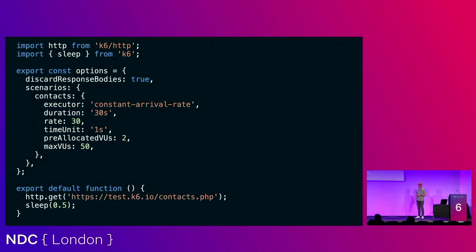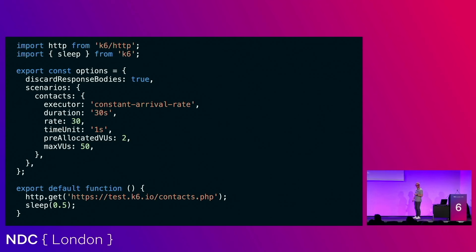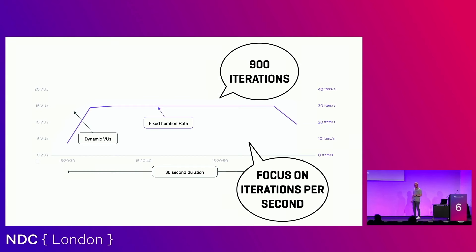The arrival rate focuses on iterations per second rather than individual VUs. We run for 30 seconds at a rate of 30 iterations per second — that's what we want to reach. Virtual users will vary, starting at 2 and going up to 50 as required. In the graph you can see VUs are dynamic and scale as needed, but the iteration rate is a straight line — a total of 900 iterations at 30 per second. If you want to see how many iterations per second your system can handle, the arrival rate executor is what you should be looking at. And then of course there is the externally controlled executor, which you've already seen.